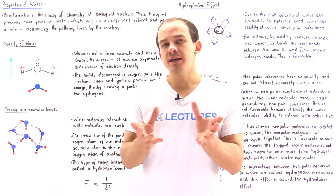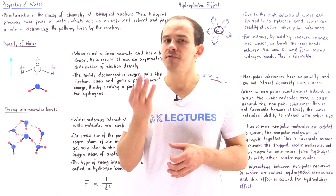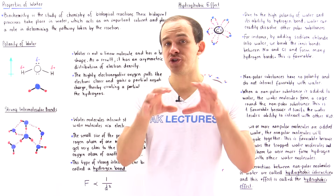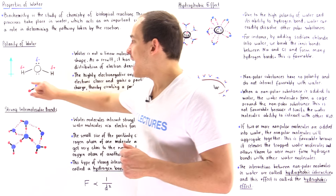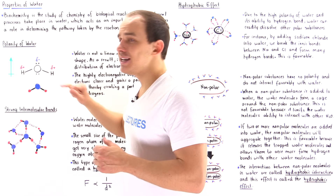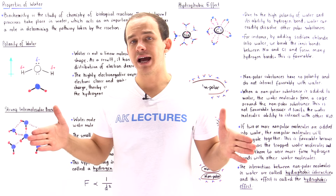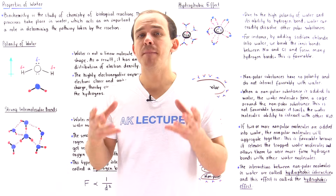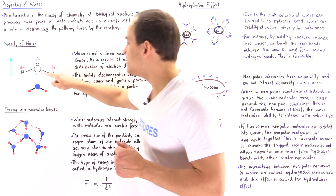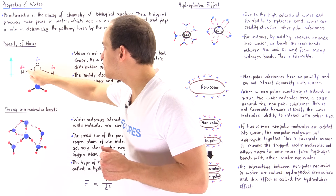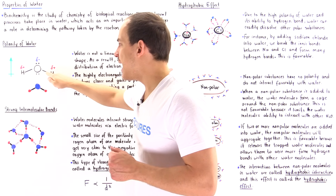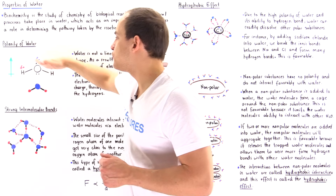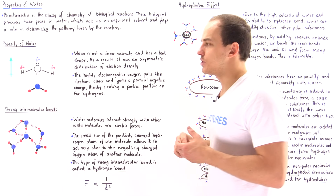A single water molecule consists of three individual atoms. We have the central oxygen atom, which is large, and the two tiny H atoms found on the side. Now, water is not a linear molecule — it has a bent shape. And what that means is these bonds create a certain angle that is not 180 degrees. So notice the bent shape of the H2O molecule.